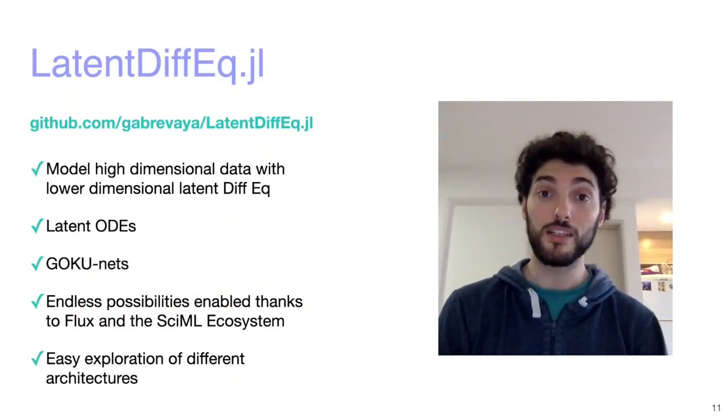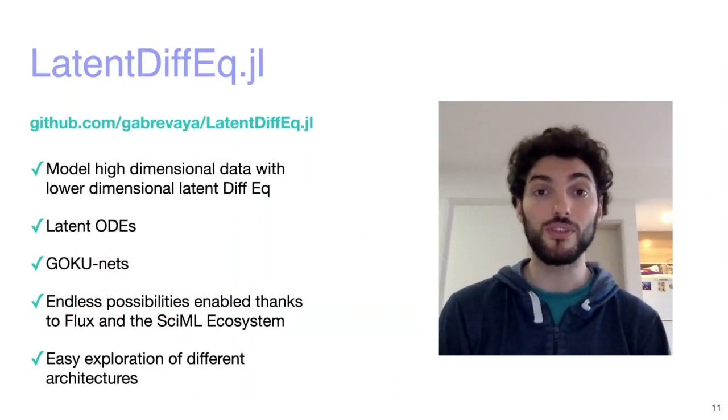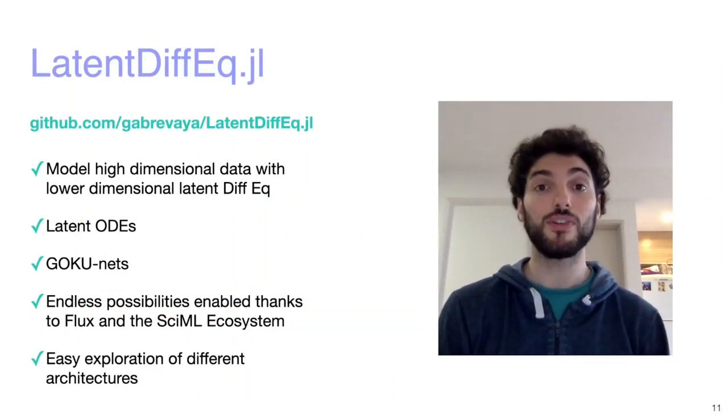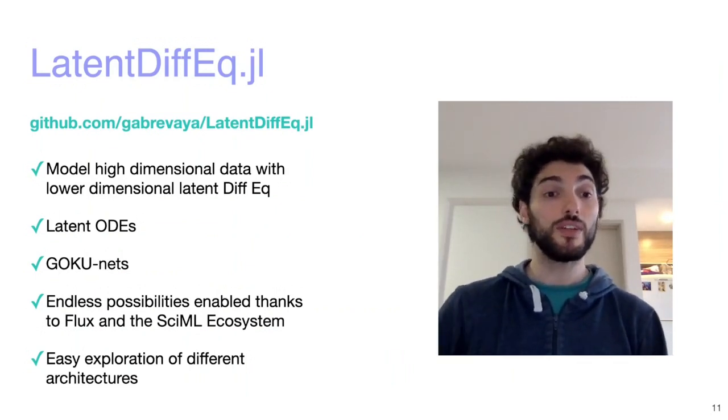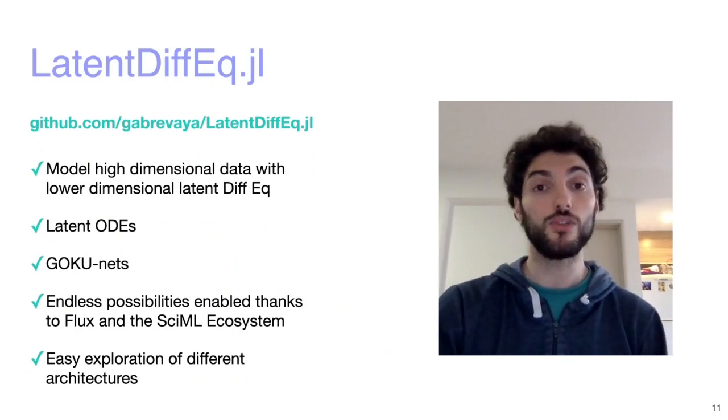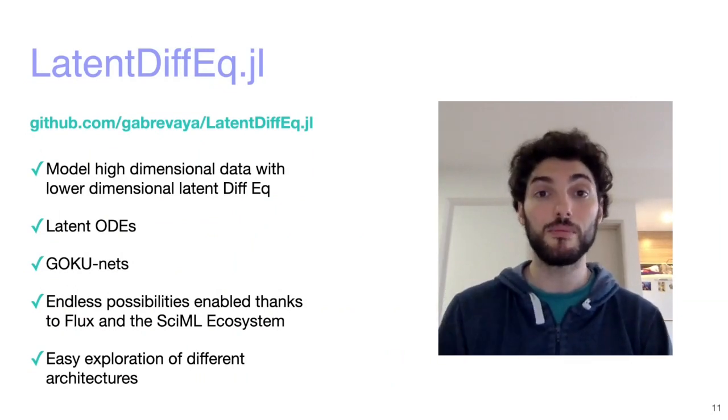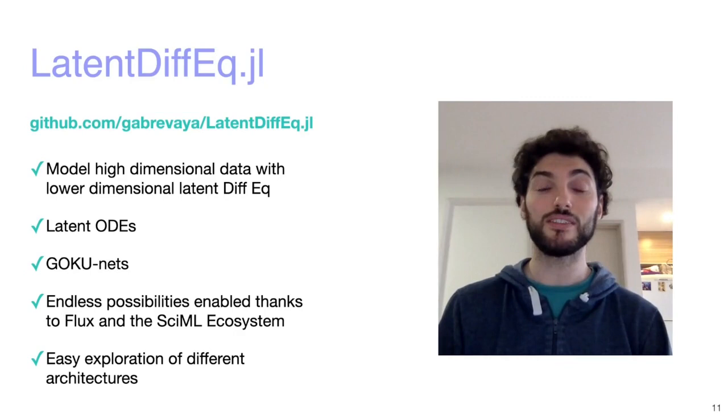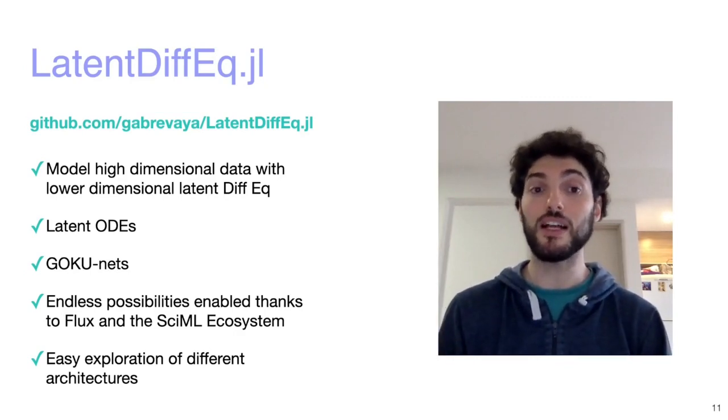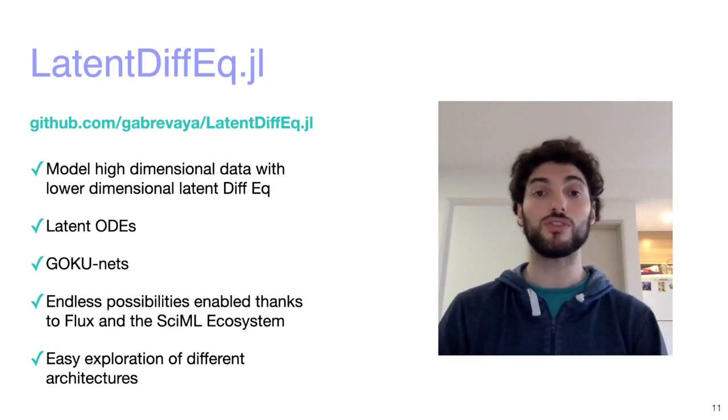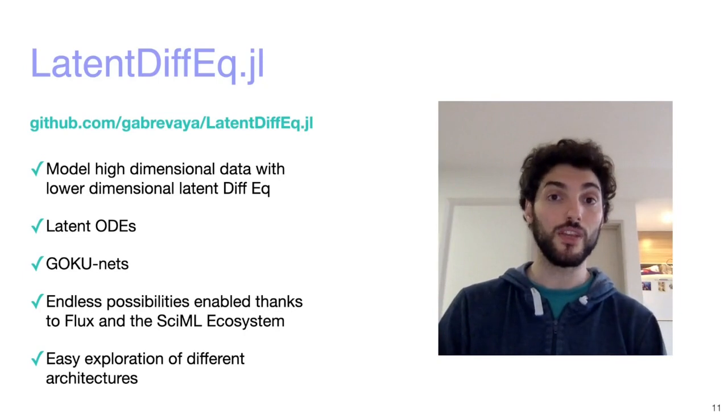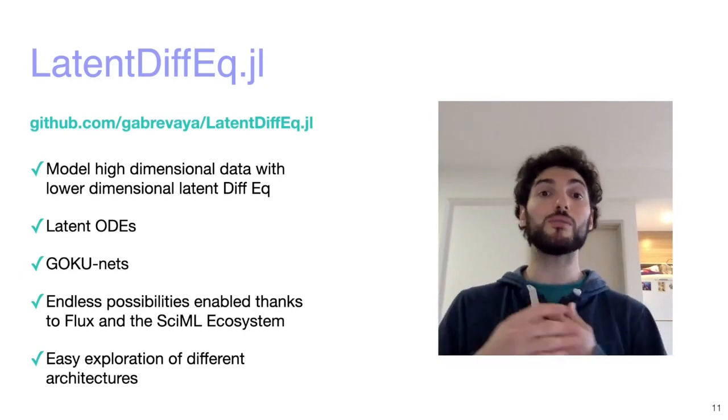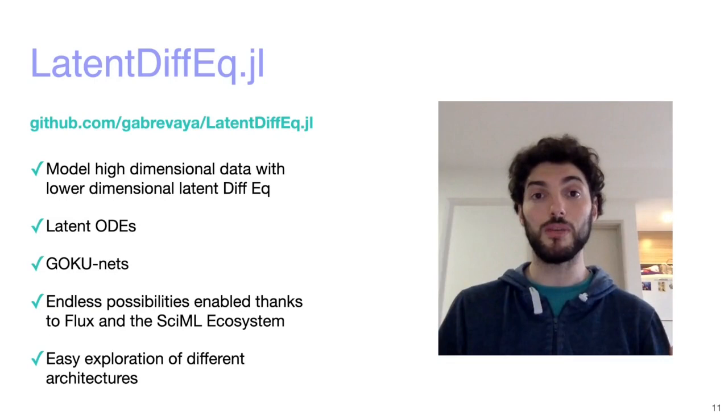The models implemented in our package can be a useful complement to DiffEqFlux for dealing with problems of higher dimensionality than the phase space of your differential equation models. We have implemented latent ODEs and GOKU-net models, and just by having them implemented in Julia, endless possibilities are enabled thanks to the power of the SciML ecosystem and Flux. For example, out of the box it is already possible to use stochastic differential equations, which wasn't available in the original implementation, or use universal differential equations, and choose between many alternative solvers and adjoint methods.